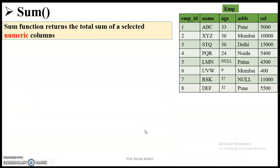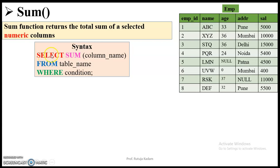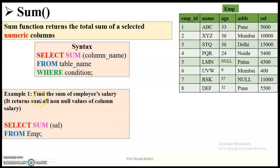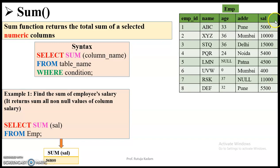Then the SUM function. The SUM function returns the total sum of a selected numeric column — pay attention to the word numeric, because it will operate on numeric columns only. The syntax is: SELECT SUM(column_name) FROM table_name WHERE condition. The first example is to find the sum of employee salary. The query is SELECT SUM(salary) FROM employee. It will return 56800, which is the addition of all values in the salary column.